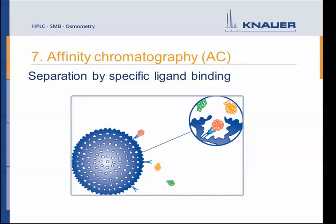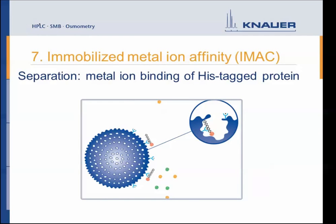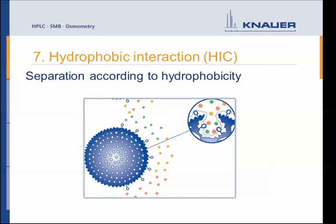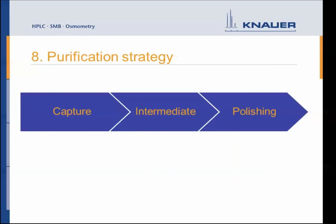Affinity chromatography separates proteins by specific ligand binding — a ligand that binds specifically to your protein of interest is bound to the beads, so only your protein of interest binds while all others elute through the column, allowing very high-purity purification. A specialized form is immobilized metal ion affinity chromatography (IMAC), where separation is based on metal ion binding of a His-tagged protein. The last method is hydrophobic interaction chromatography, where separation is according to protein hydrophobicity — the most hydrophobic proteins bind strongest to the resin, and elution is achieved by slowly decreasing the salt gradient.